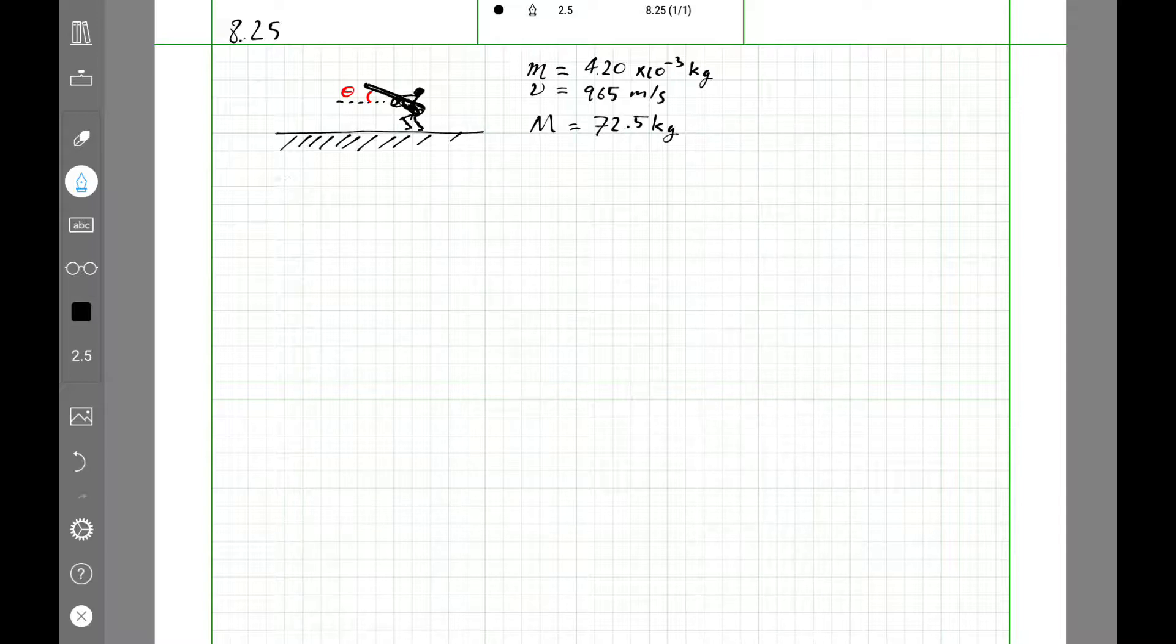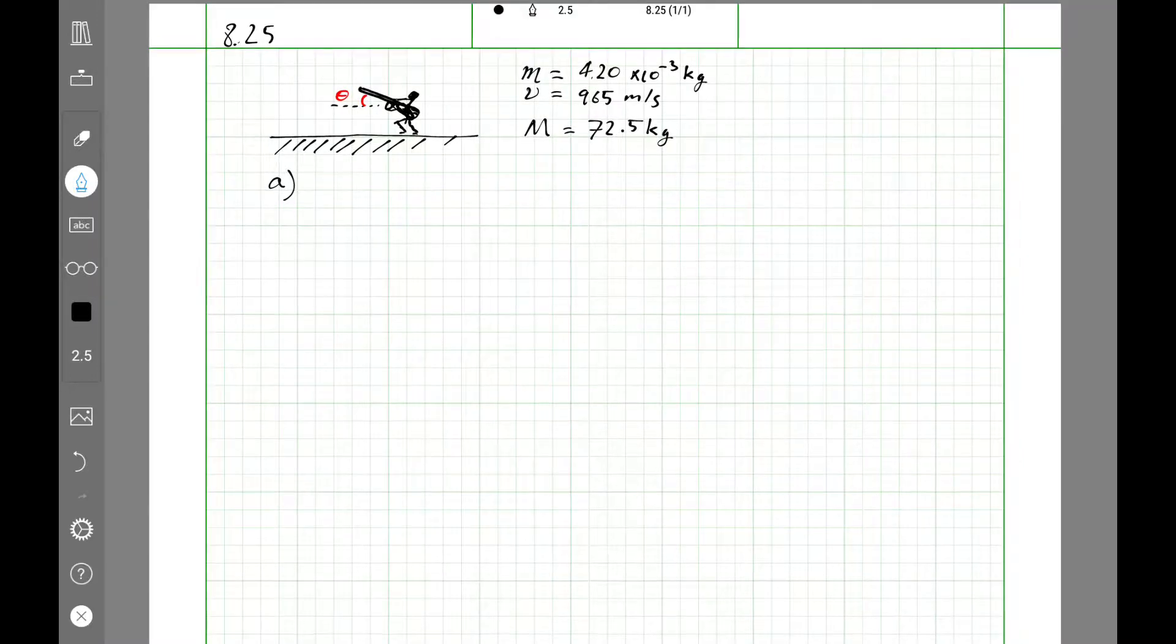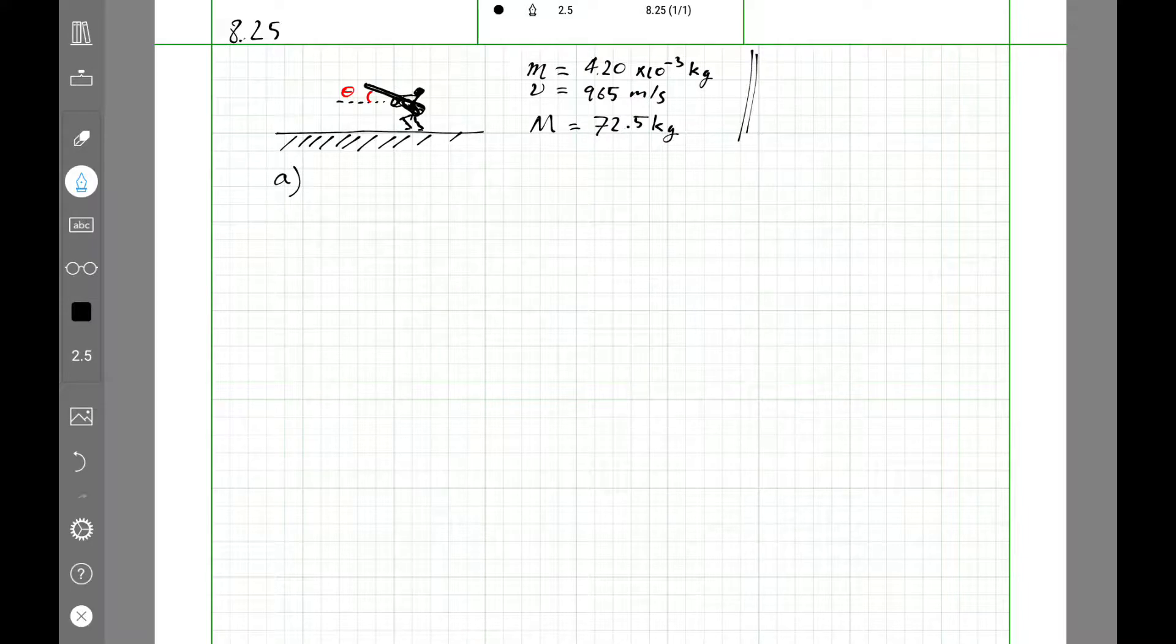And the first part of the problem, what's the recoil velocity of the hunter? So when he shoots the bullet, there's this interaction. I think of this as an elastic collision in that it's the reverse, it's the time reverse of an elastic collision.